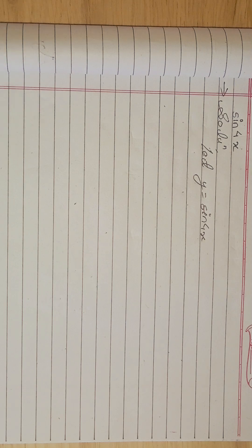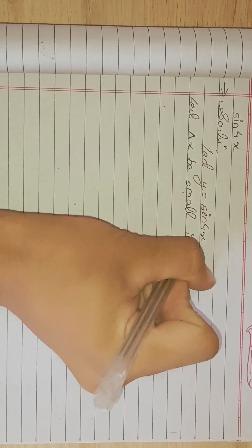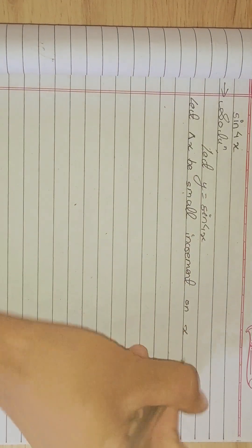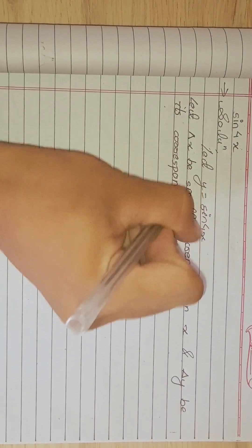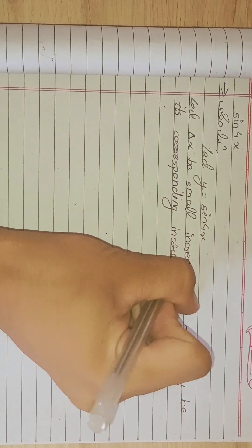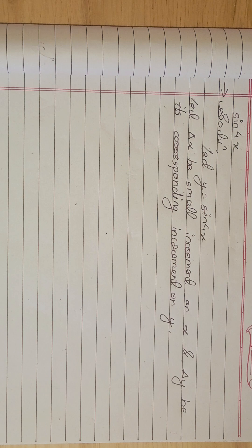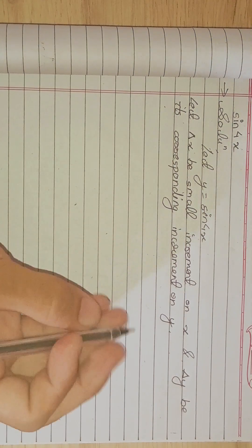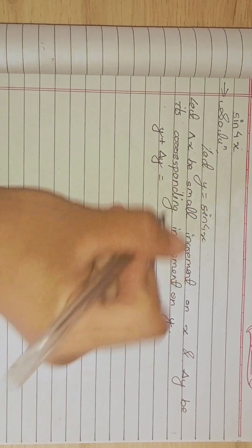Now we have our function. Since we are using the first principle to solve this question, we can add δx and δy as small increments in x and y respectively. Let δx be a small increment in x and δy be the corresponding increment in y. This is what we do when we use the first principle.